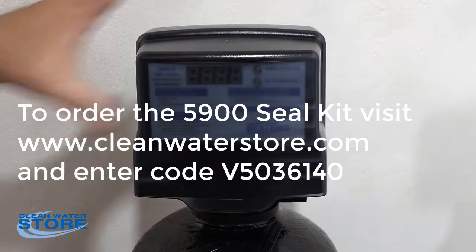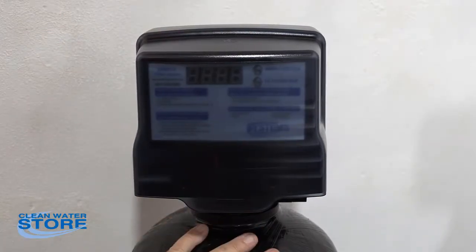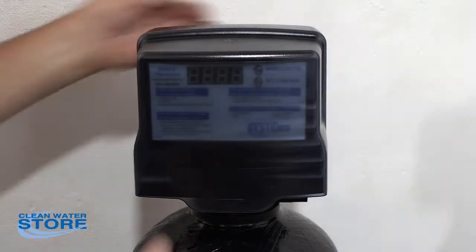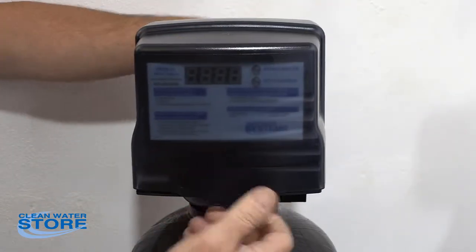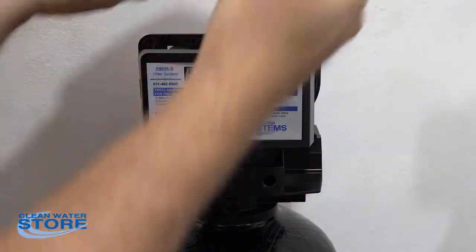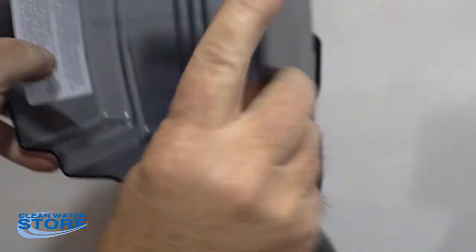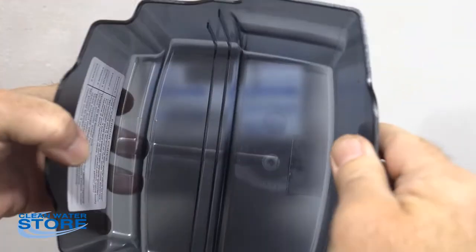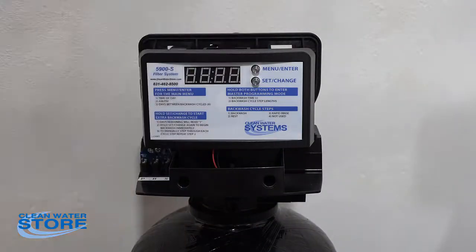You can definitely do this with the unit still installed to the tank. As a matter of fact, we recommend you do that so you don't have to unthread everything. The first thing you do is there's two little tabs on the helmet here in the front and in the back. You just slightly pull those aside and that helmet piece will pop off.